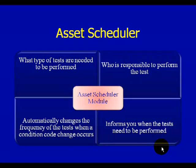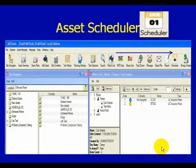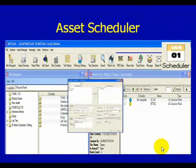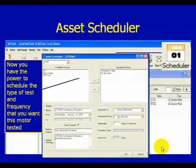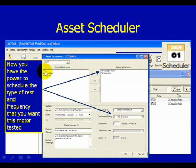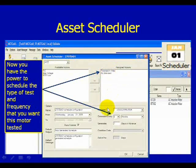Now let's take a look at the software. By clicking on our Scheduler icon, up pops our Asset Scheduler screen. On the top, we're going to do an MCE test. We have the ability to have the available actions for that MCE test on our left-hand side, and we assign what tests we want to do on the right-hand side. We assign these tests to a specific individual — in this case it's an administrator.